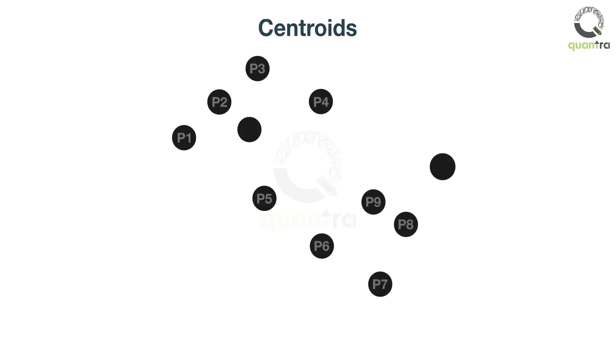We can name these points as p1, p2 and so on. Then it will randomly choose two points. These are also called centroids. We name these centroids as c1 and c2.